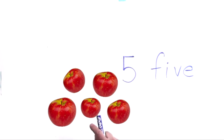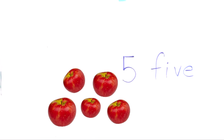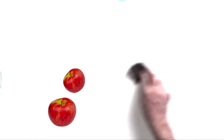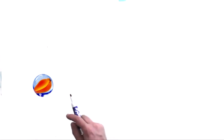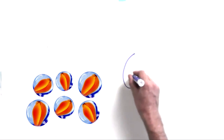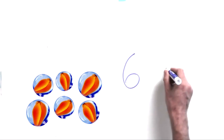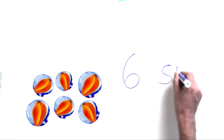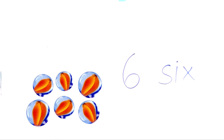So five: one, two, three, four, five — the number five and the word five. On to number six. Let's do something fun like marbles. Marbles are kind of cool. I like marbles. Let's do six marbles: one, two, three, four, five, six. We have six marbles. And here's how we write the word six — S-I-X. There we have six marbles: the number six and the word six.